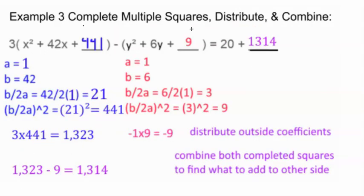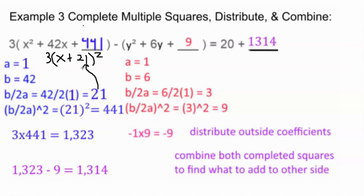Example 3: complete multiple squares, distribute, and combine. They're already factored out. We have two squares to complete. For the blue one, identify b/2a: b is 42, 42 divided by 2 is 21, and 21 squared is 441. So that goes right here. The factored form would be 3(x + 21)². This 441 goes on the other side.